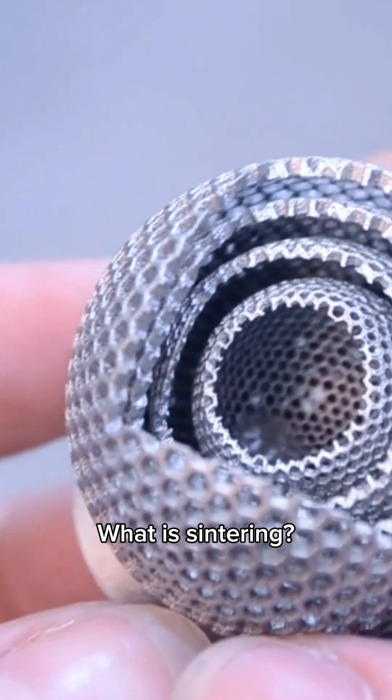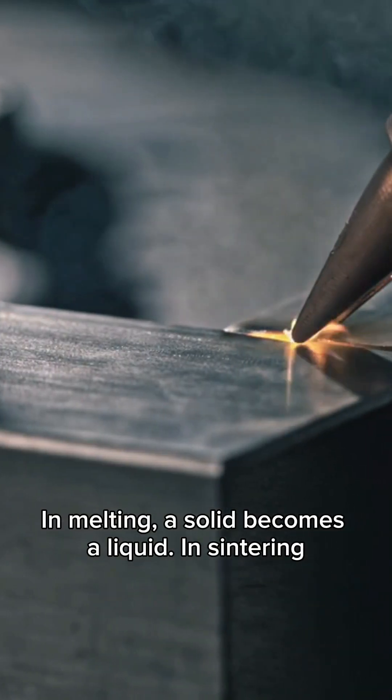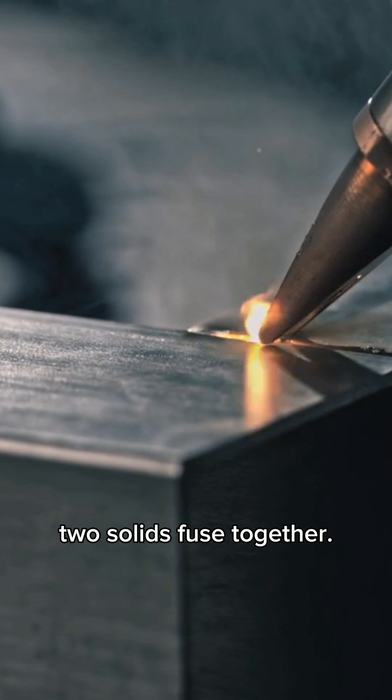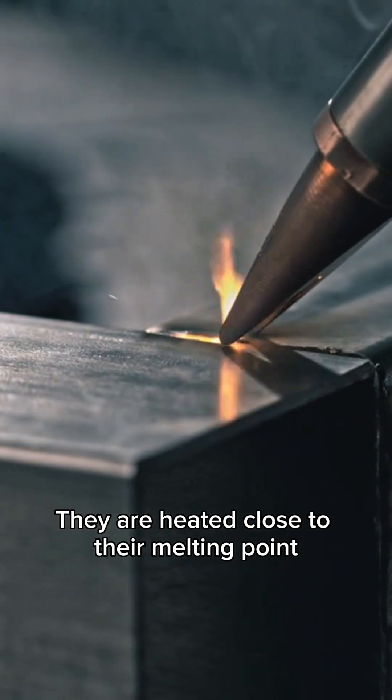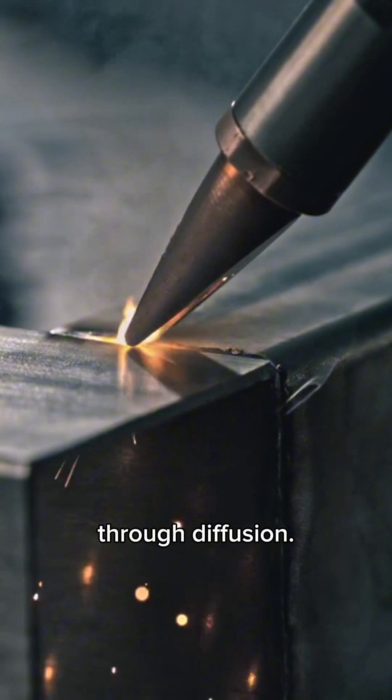What is sintering? In melting, a solid becomes a liquid. In sintering, two solids fuse together. They are heated close to their melting point and chemically bond together at the molecular level through diffusion.